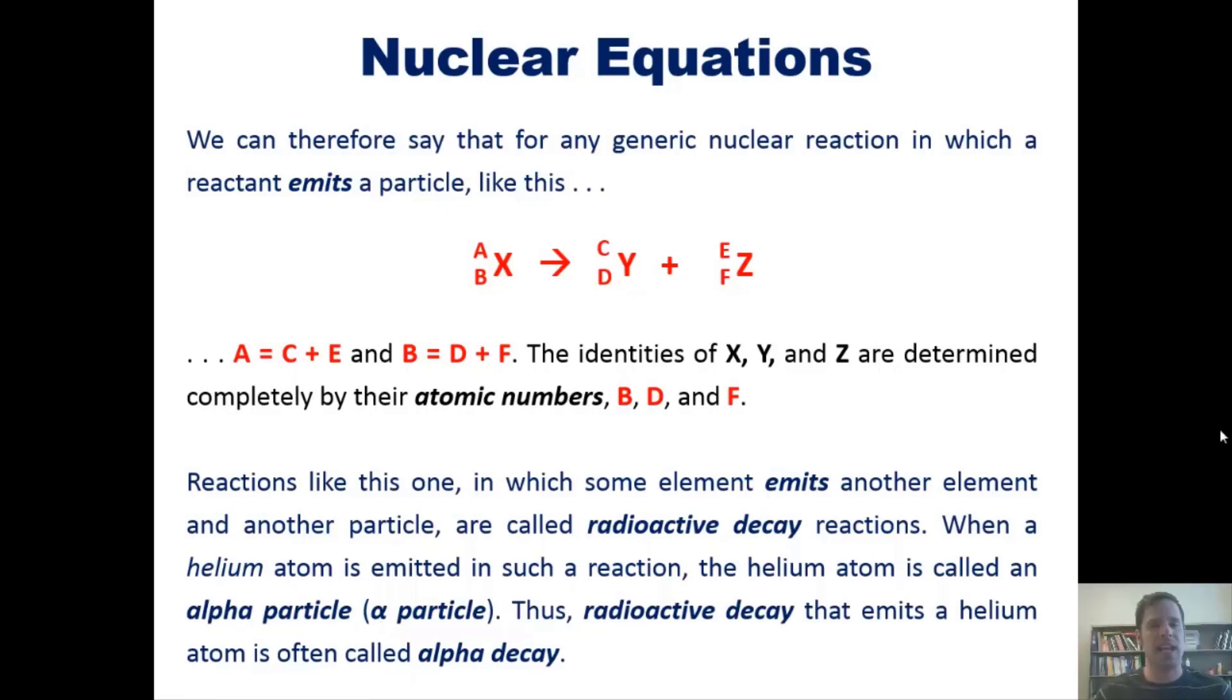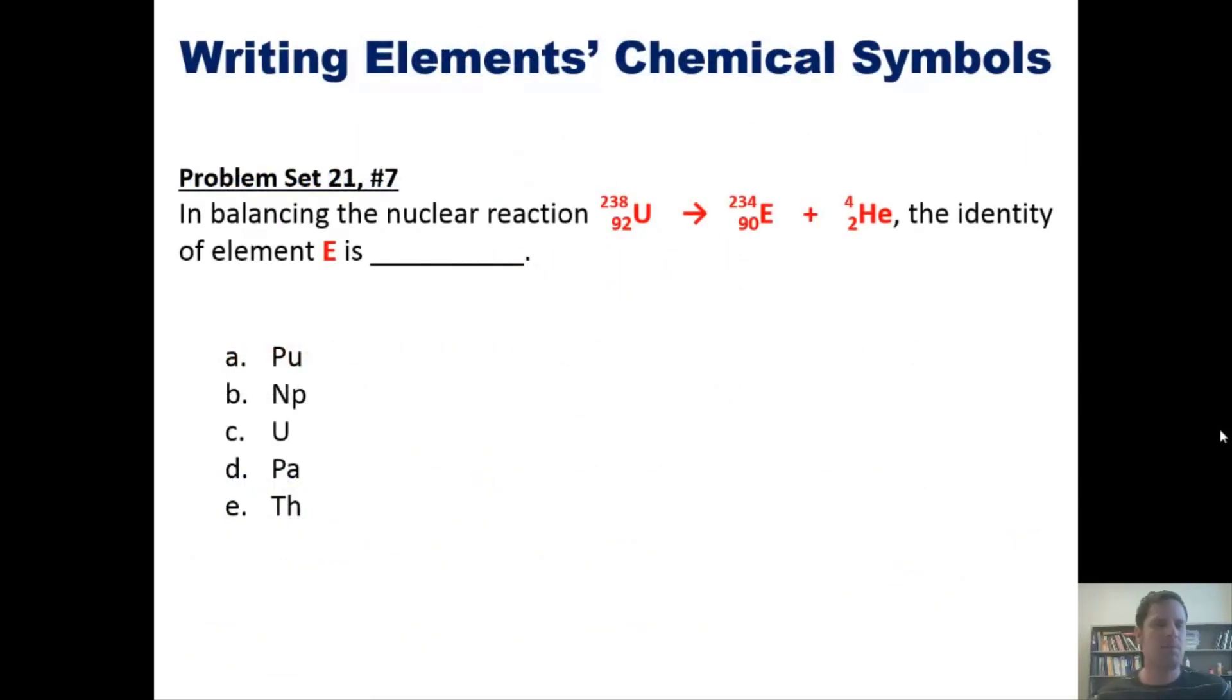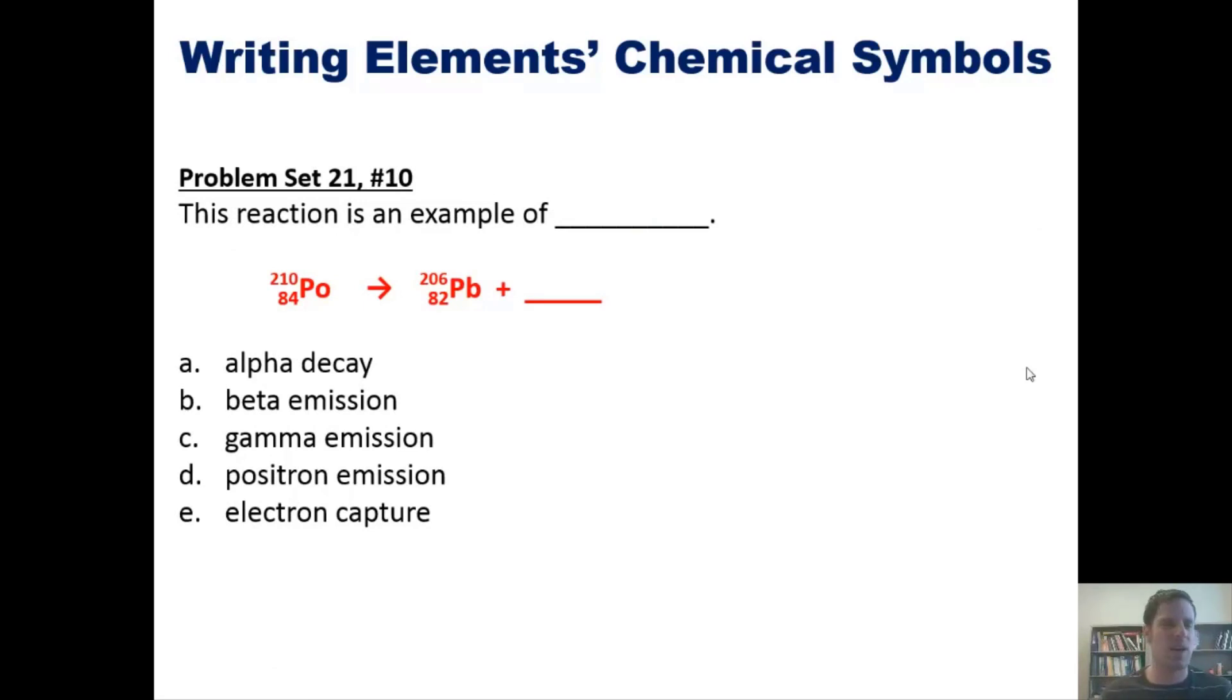This takes us to a great chapter problem in balancing the nuclear equation shown here. The identity of element E is... I'll let you figure that out on your own. Now, how about this one?